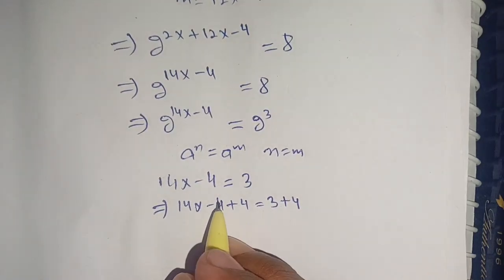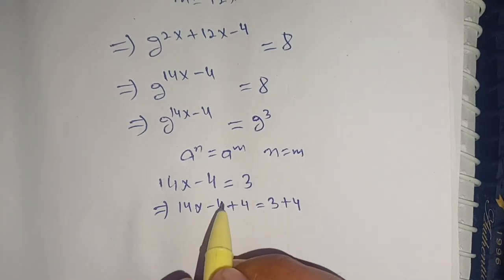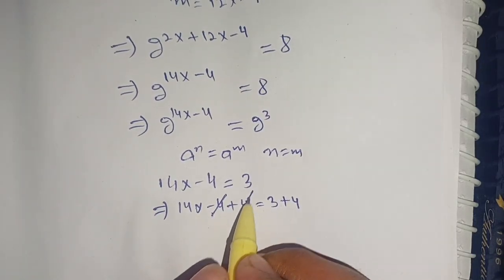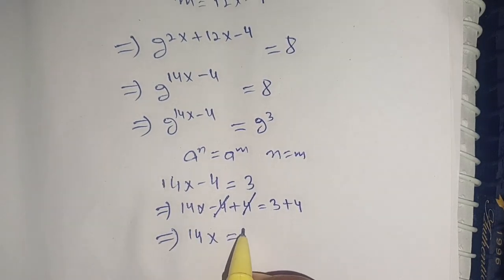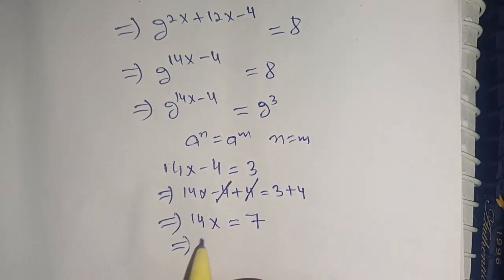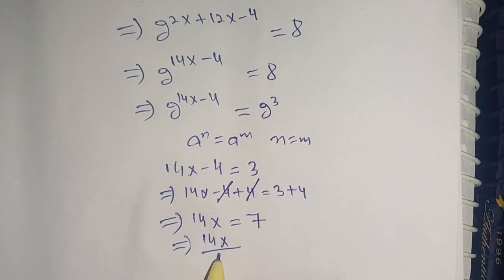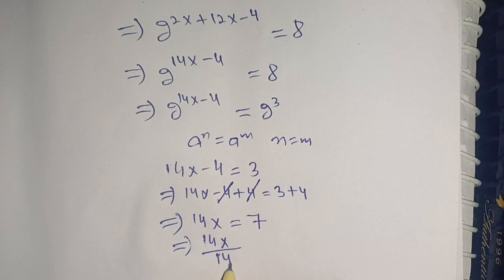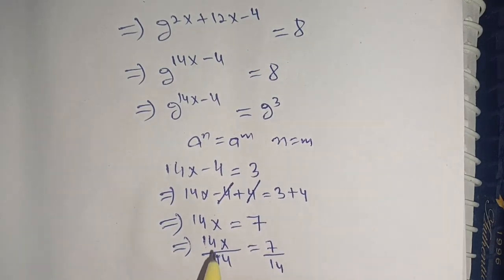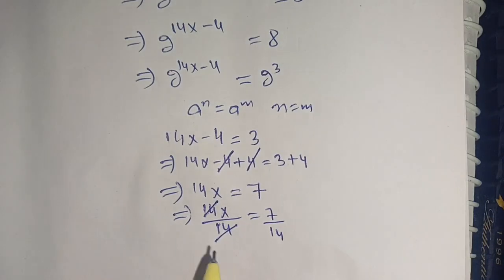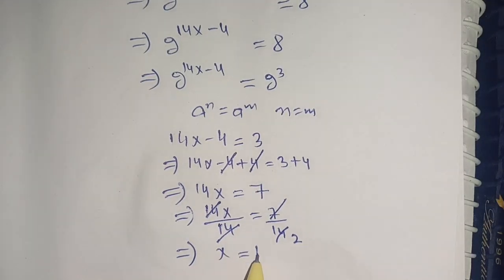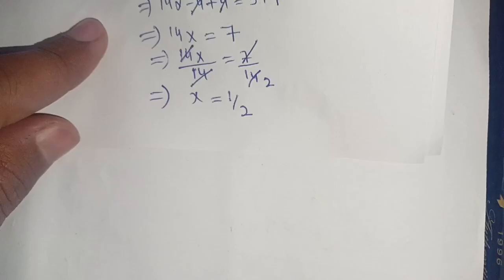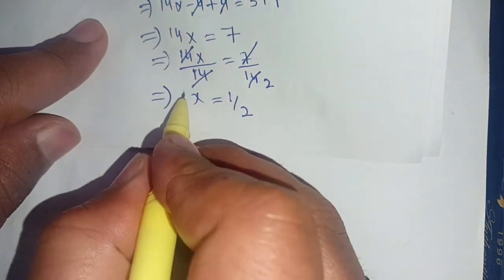Adding 4 to both sides: 14x - 4 + 4 = 3 + 4, so 14x = 7. Dividing both sides by 14: x = 7/14, which implies x = 1/2.